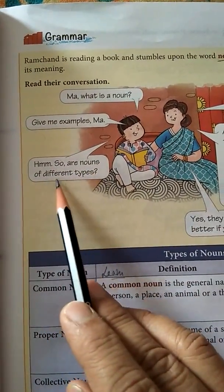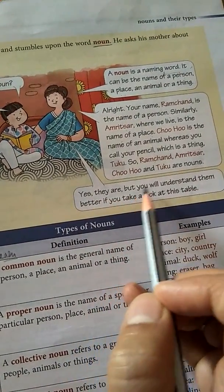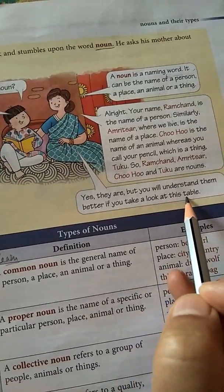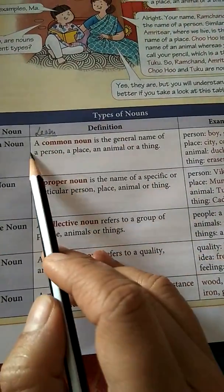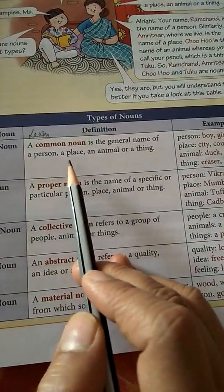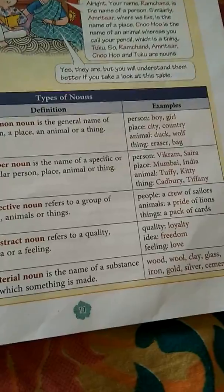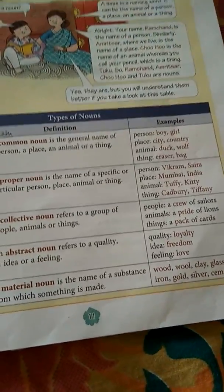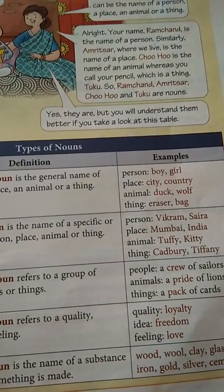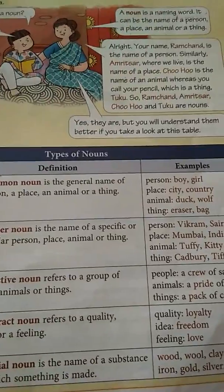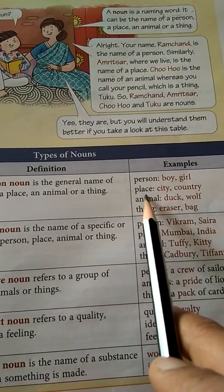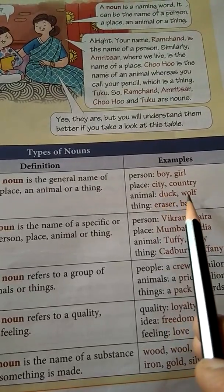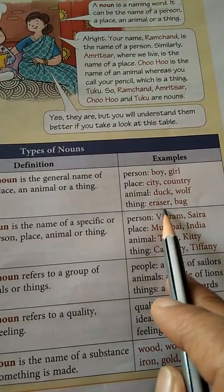Are nouns of different types? Yes, they are. But you will understand them better if you take a look at this table. Common noun: a common noun is the general name of a person, place, animal, or thing. For example, lion — I am talking about lion in general, not naming any particular lion, so it is a common noun. Examples: person — boy or girl; place — city or country; animal — duck, wolf, or any other animal; thing — eraser, bag, etc. These are different types of common nouns.